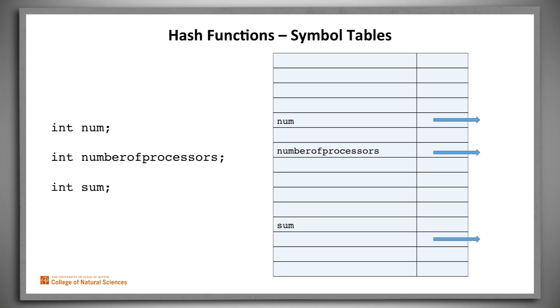Suppose that we want to build a compiler or an interpreter for some programming language. We're going to need to keep track of the identifiers, such as variable names, that have been defined along with the information about what type they are, where they're stored, and so forth. To do that, we'll use what's called a symbol table.